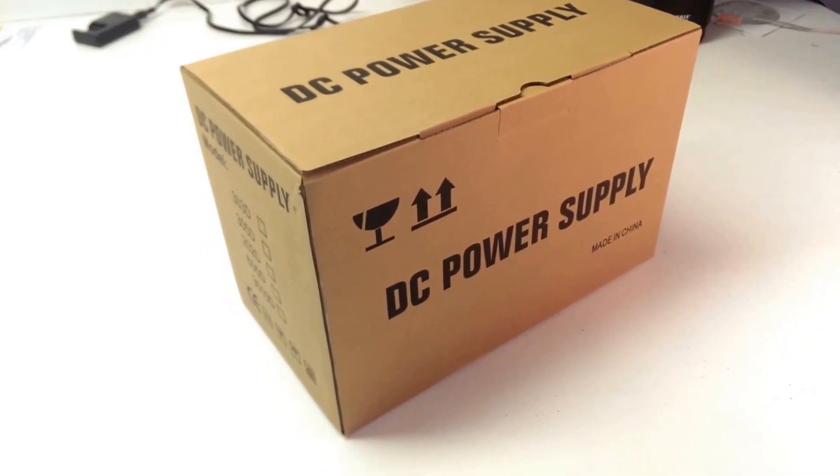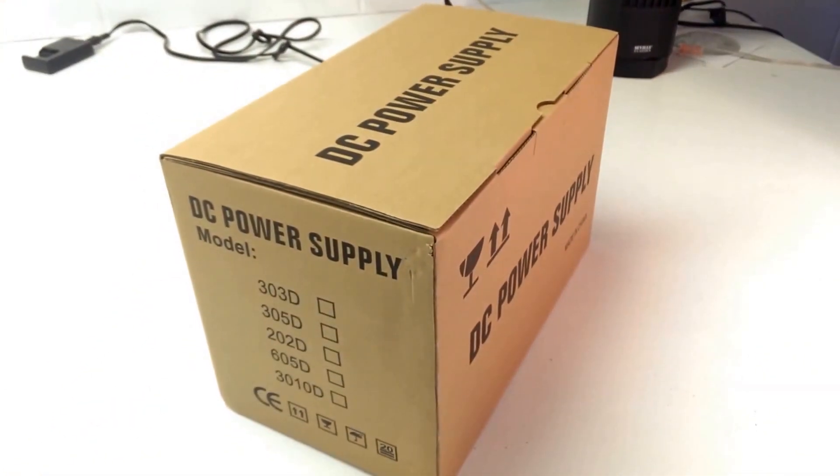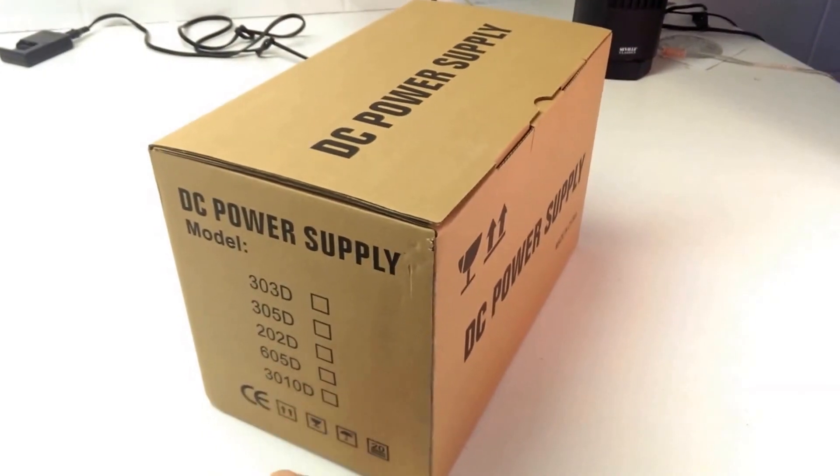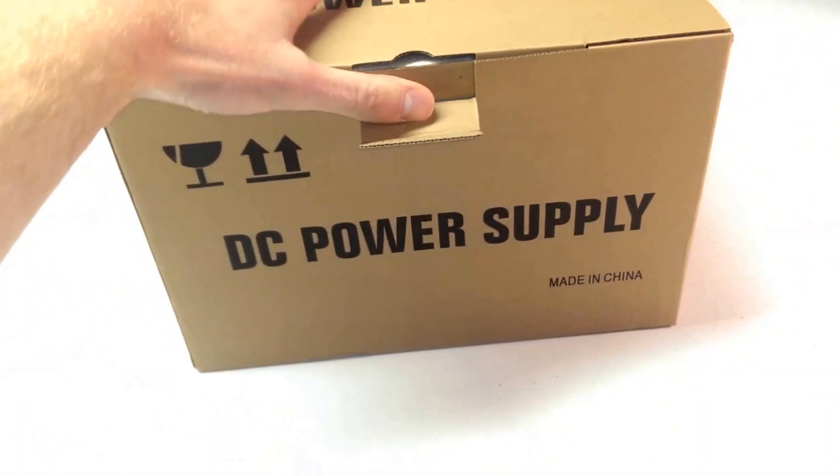I got this off of Newegg. It just came in the mail today, so let's take it out of the box. I think what I got was the 3010D 30 volt 10 amp, but they don't seem to have it checked, so I hope they got the right thing inside.